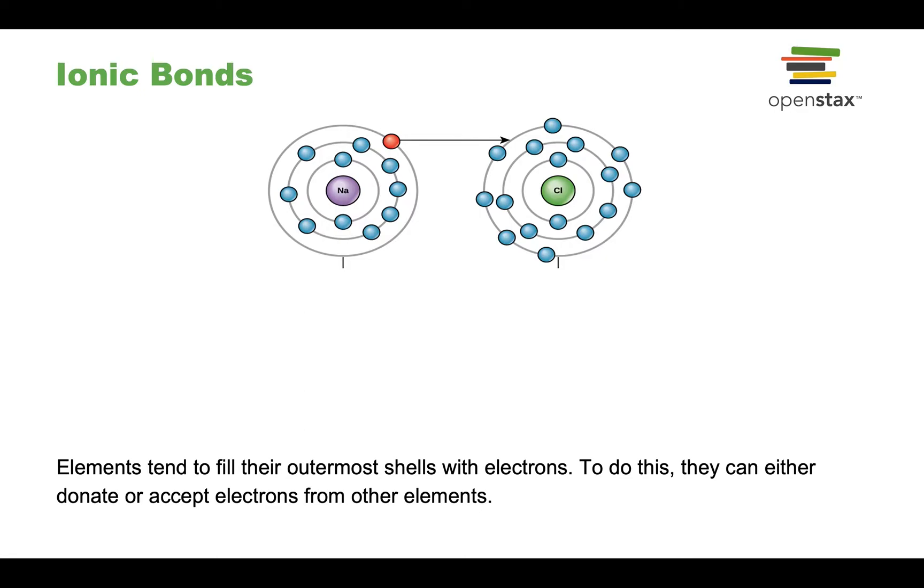The first type of bond we're going to talk about are ionic bonds. Ionic bonds form by the virtue of different atoms having an opposite electric charge. Let's go back to sodium chloride again. We mentioned the tendency of atoms is to have a full outer electronic shell. What happens in this case is that sodium will donate that one electron that it has on the third shell to chlorine which only needs one more electron to fill the outer shell.